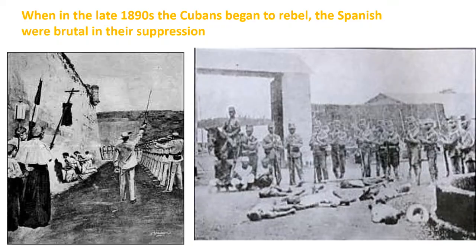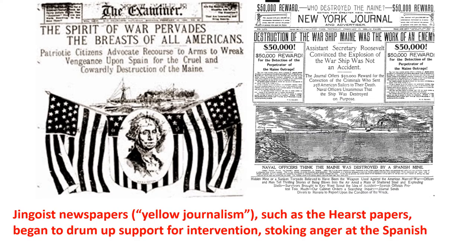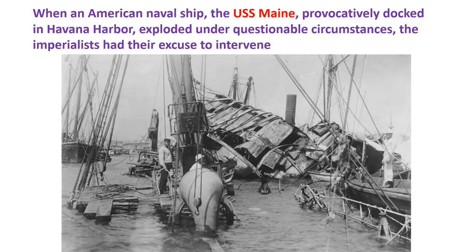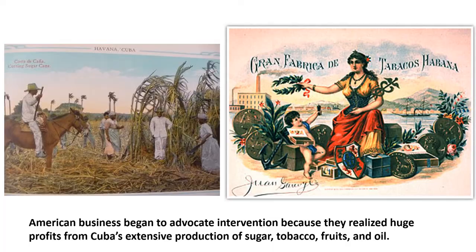When the American naval ship USS Maine, provocatively docked in Havana Harbor, exploded under questionable circumstances, the imperialists and the American government had their excuse to intervene. American businesses also advocated intervention, realizing huge profits from Cuba's extensive production of sugar, tobacco, fruits, and oil. Congress declared war, launching what's known as the Spanish-American War, and very quickly the United States won, gaining a bounty of new territories by defeating the Spanish. A newspaper declares the war was won. The United States won de facto control over a so-called independent Cuba, and in the Treaty of Paris ending the war, got the Philippines, as well as Puerto Rico and Guam. The United States also officially annexed Hawaii in July 1898.